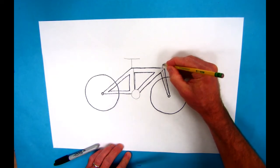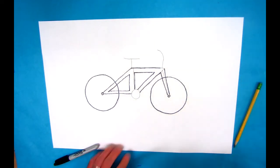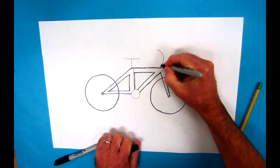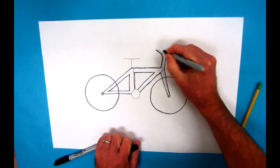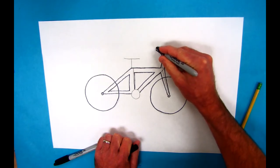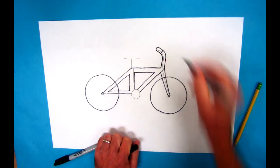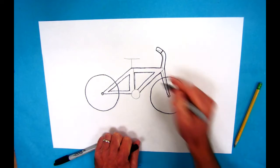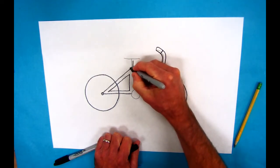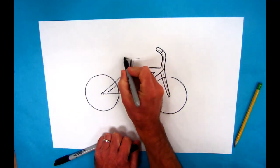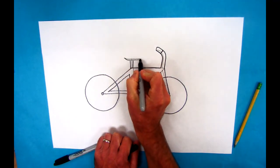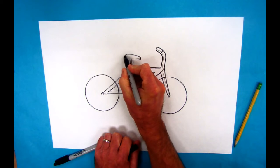It doesn't have a seat yet. The seat is sort of like the letter T, and the steering is done with handlebars. Those come up and curve, and usually have a little grippy thing at the end for you to hold onto.